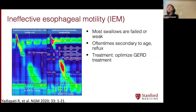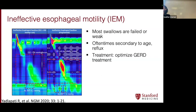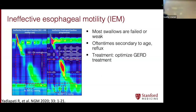Sometimes people have just kind of weak contractions — they're not absent, but they're just really weak. That can be secondary to reflux, or can just happen as a circumstance of age. In those patients, it's really hard — you can't really restore that peristalsis — but you can try your best to optimize reflux therapy to ensure that it's not exacerbating their ineffective motility.